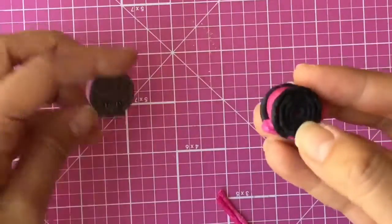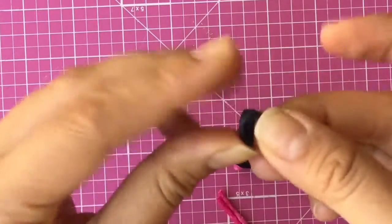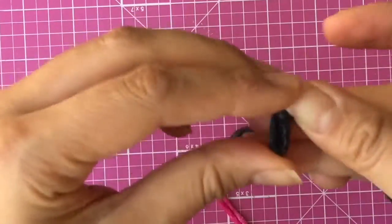And now what else do we have? We need to make little black feet. So I'm going to take just some black I have here and then I'm going to just turn it and make little feet.